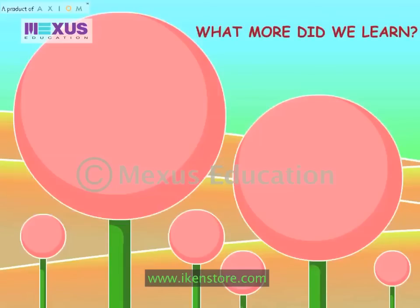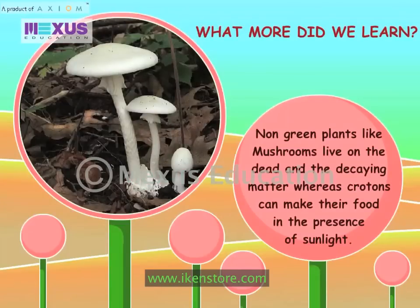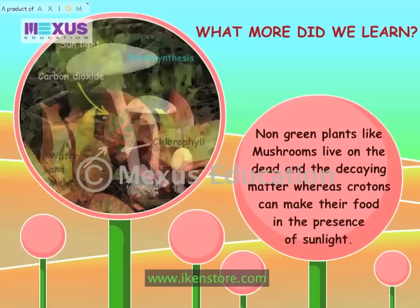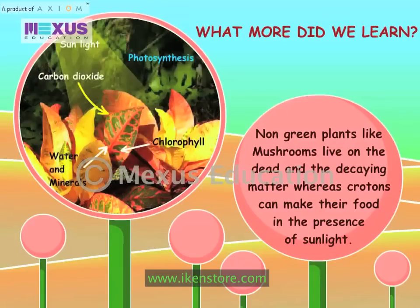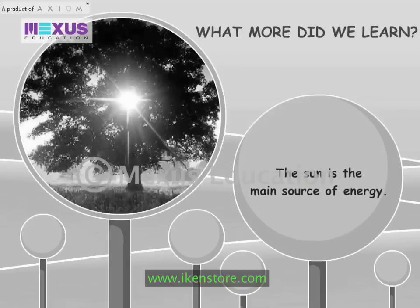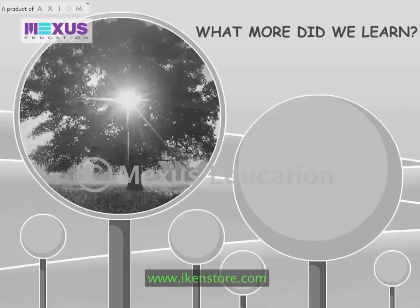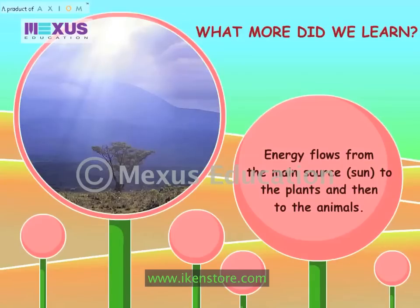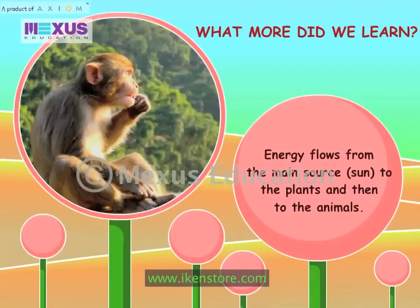What more did we learn? Non-green plants like mushrooms live on dead and decaying matter, whereas crotons can make their food in the presence of sunlight. The leaves in non-leafy plants like cactus have been modified into thorns to avoid loss of water. The sun is the main source of energy. Energy flows from the sun to the plants and then to the animals.